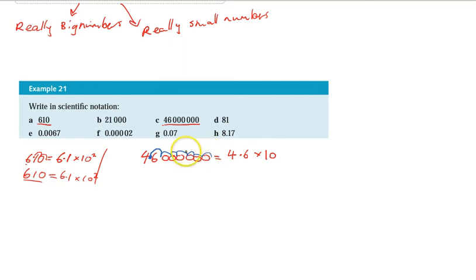1, 2, 3, 4, 5, 6, 7. I've moved it 7 spaces. So 4.6 times 10 to the power of 7 which is essentially just 10 million. 4.6 times 10 million is going to equal 46 million. So if you're asked to write in scientific notation that's all you're doing. You're turning 46 million, you're moving all those decimals to get 4.6 and then you're getting 10 to the power of 7.